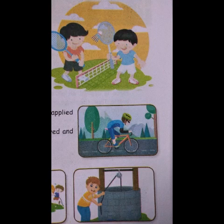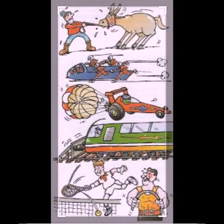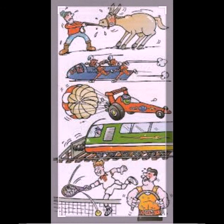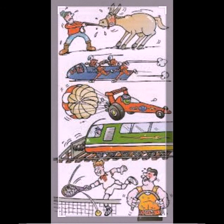Now let's learn about how force can stop a moving object. An object stops moving when we apply a force in the opposite direction. For example, in football, the goalkeeper stands on the opposite side and catches the ball — they apply force to stop it. Similarly, in vehicles, we use brakes to stop them. We are applying a force to stop a moving object.